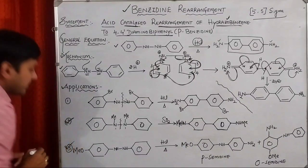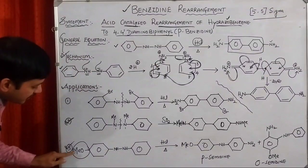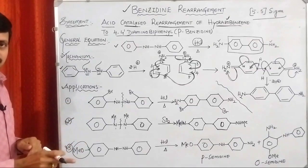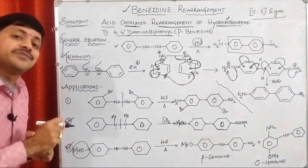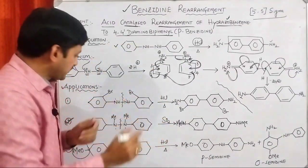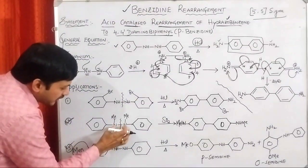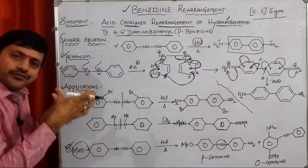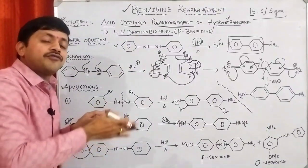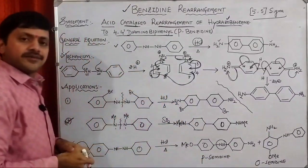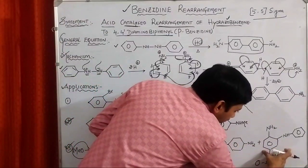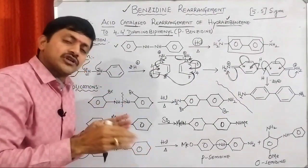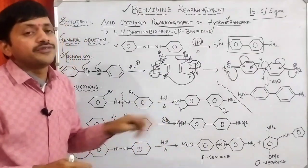In the third example, whenever we have a substitution at the para position, we will not get parabenzidine. Instead, what we get are semidines — ortho-semidine and para-semidine. In the previous case, the N–N bond is cleaved and both nitrogens end up at para positions as amino groups. But in this case, one nitrogen group remains between the two phenyl rings and the other nitrogen is in the form of –NH₂, giving a semidine structure. The attacking may take place at the para position or at the ortho position, thereby giving two different kinds of products.